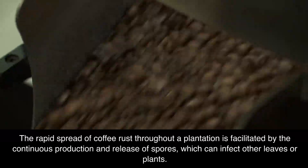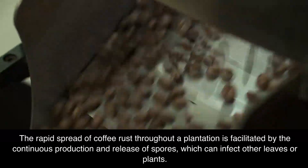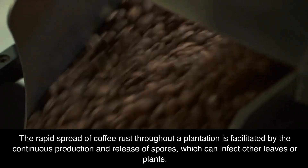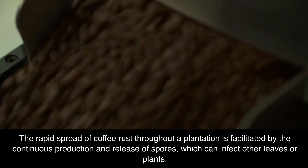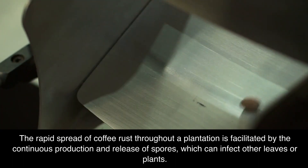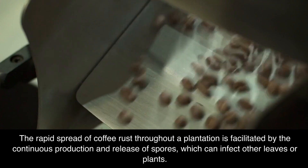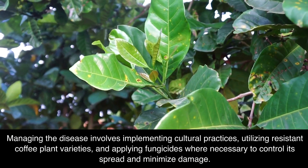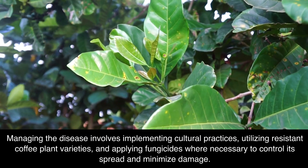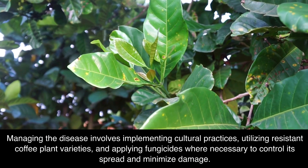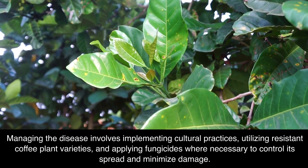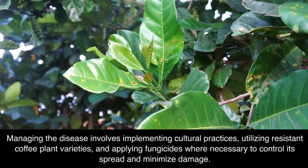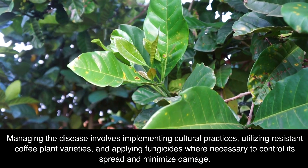The rapid spread of coffee rust throughout a plantation is facilitated by the continuous production and release of spores, which can infect other leaves or plants. Managing the disease involves implementing cultural practices, utilizing resistant coffee plant varieties, and applying fungicides where necessary to control its spread and minimize damage.